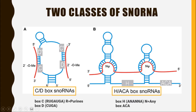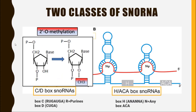In this picture you can also see red lines, which represent the ribosomal RNA. The first class, C/D box snoRNA, performs the post-transcriptional modification on ribosomal RNA called 2'-O methylation. This means it attaches a methyl group to carbon number 2 on the nucleotide of ribosomal RNA.